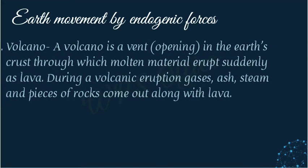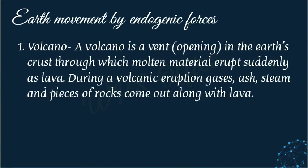A volcano is a vent in the earth's crust through which molten material erupts suddenly as lava. When changes occur inside the earth, the melted rock material — lava — comes out suddenly through an opening called a vent. During a volcanic eruption, gases, ash, steam, and pieces of rocks come out along with lava.